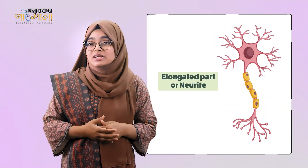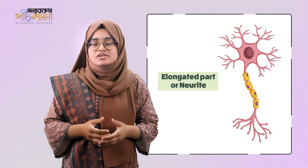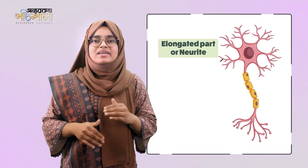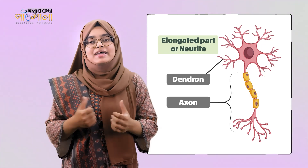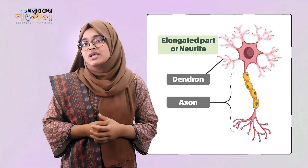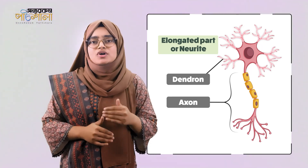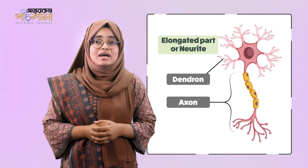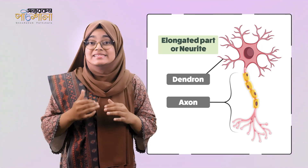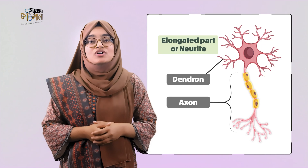Now let's come to the elongated part or neurite. They are extensions from the cell body of the neuron and are of two types: dendron and axon. The small branch elongations around the cell body are dendrons, which can be zero to one hundred in number for one cell body. And a single long extension from the cell body is called the axon.